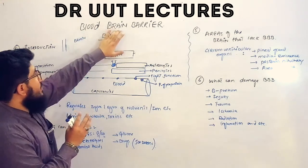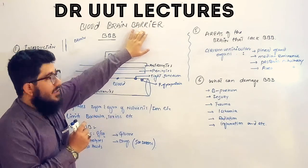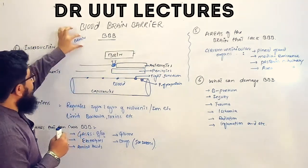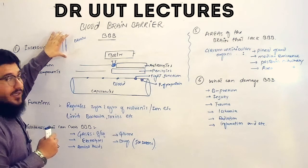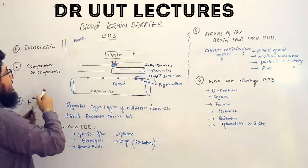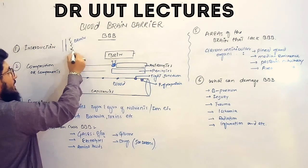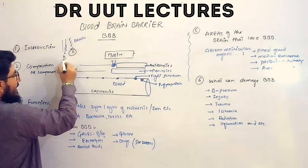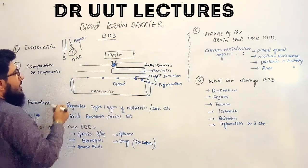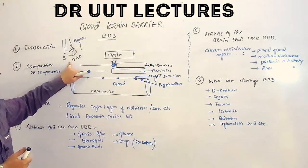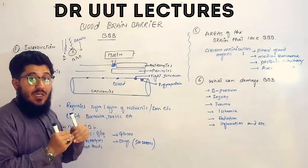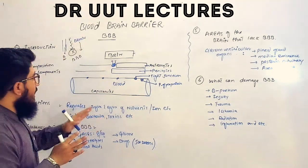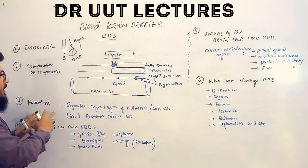Let's start with the introduction. The word 'barrier' means obstacle. So if there is an obstacle present between the brain and the blood — that is known as the blood brain barrier. This barrier is for selectively allowing substances to move from the blood towards the brain.